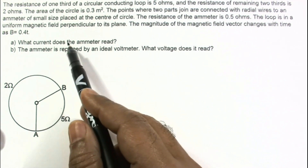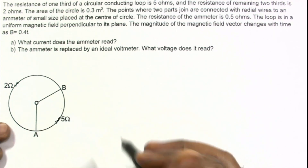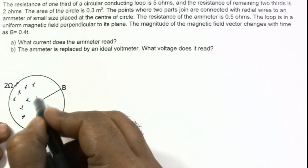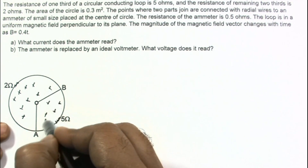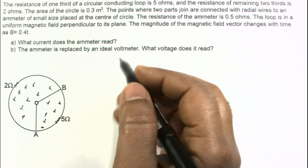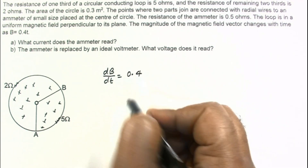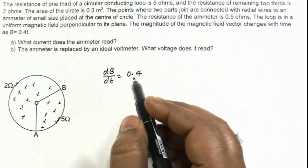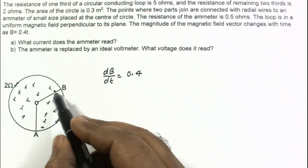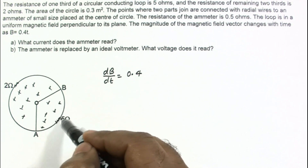For question (a), the 2-ohm resistance and 5-ohm resistance are identified. Assuming the magnetic field is perpendicular and into the plane, the magnetic field is increasing with time. dB/dt = 0.4, so the field increases at a constant rate. Since the magnetic flux is increasing, an EMF will be induced in the anti-clockwise sense to oppose the increasing flux.